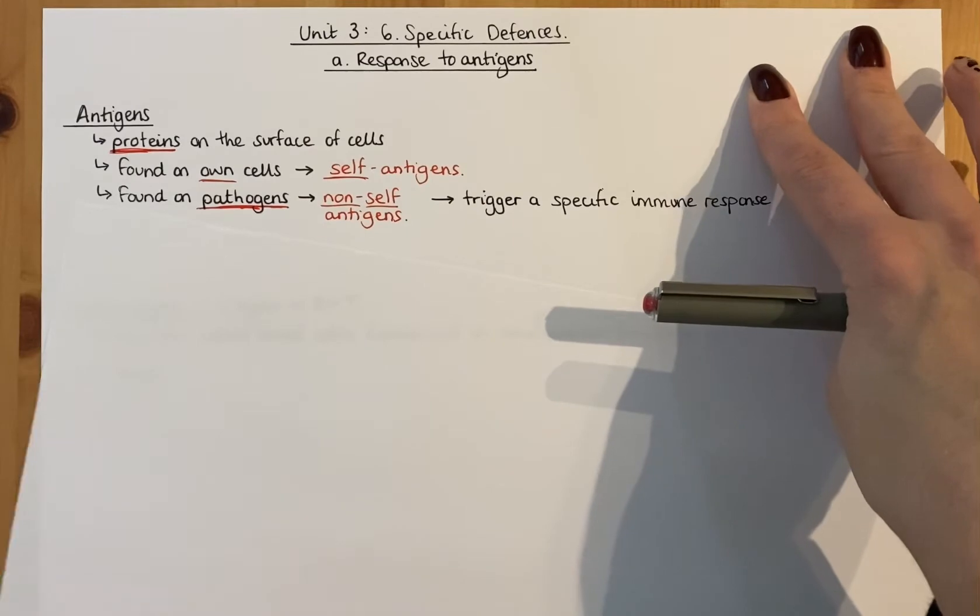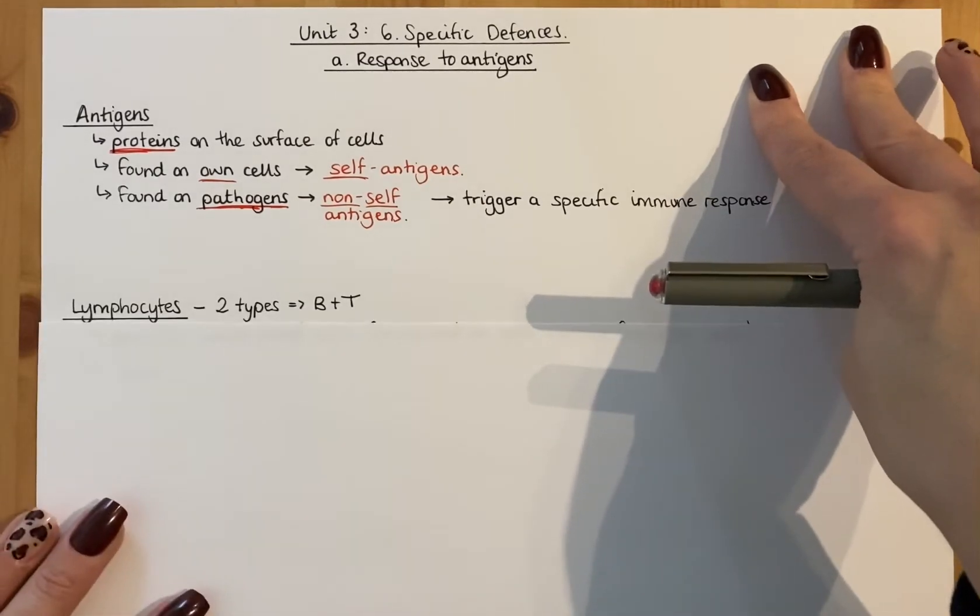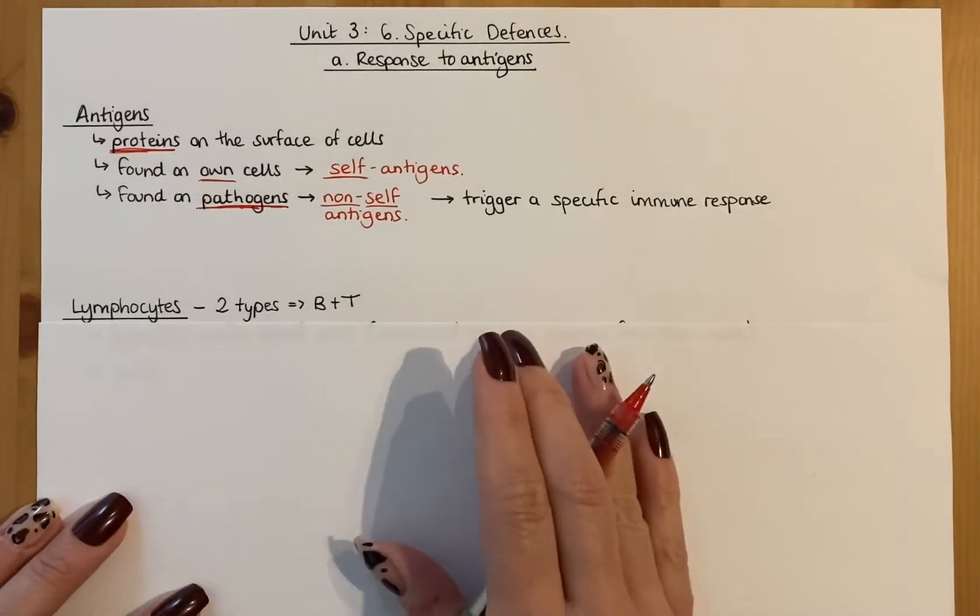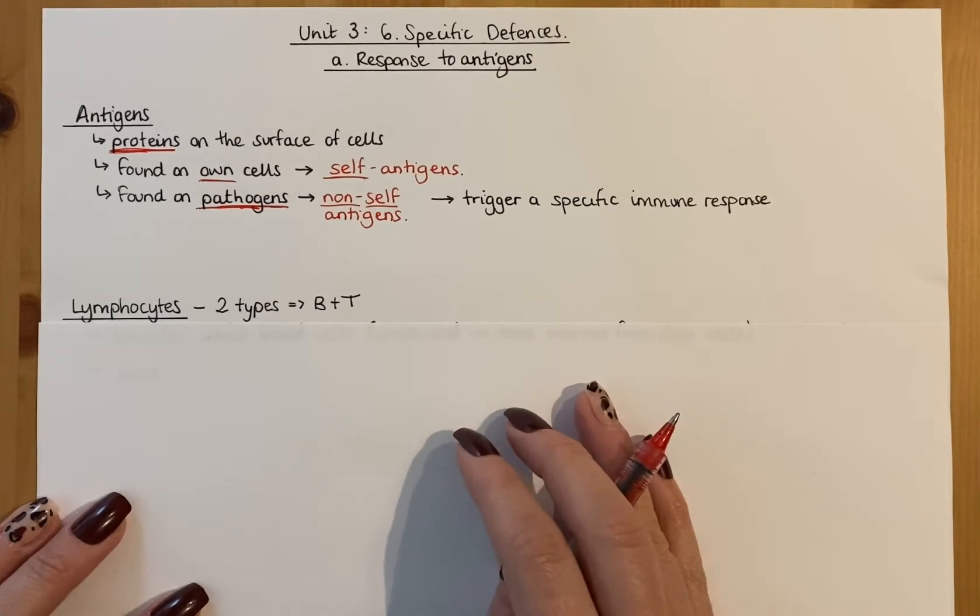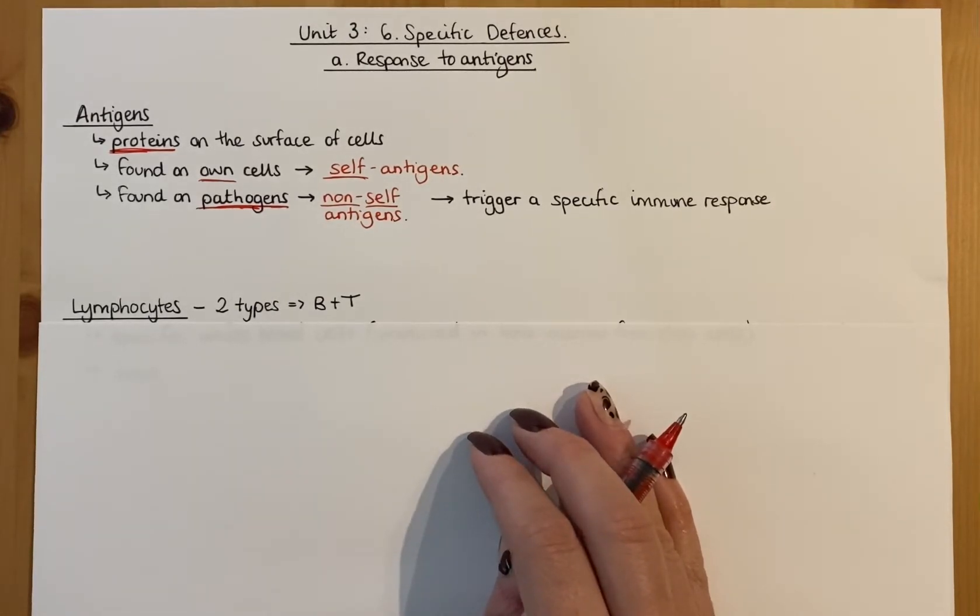We have lymphocytes. Now this is covered in National 5 just very generally. So phagocytes are covered in National 5 in terms of them engulfing and digesting and we cover them in higher. And this also covers lymphocytes.